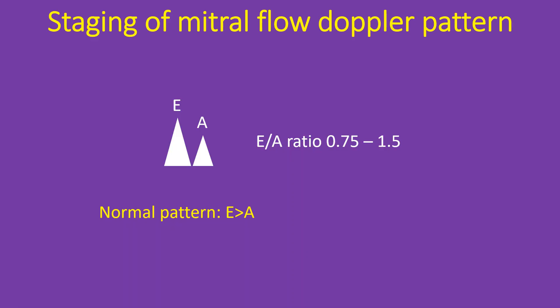The normal ratio between the amplitudes of E and A waves — the E by A ratio — is 0.75 to 1.5. The mitral flow Doppler patterns in left ventricular diastolic dysfunction have been divided into 4 stages.